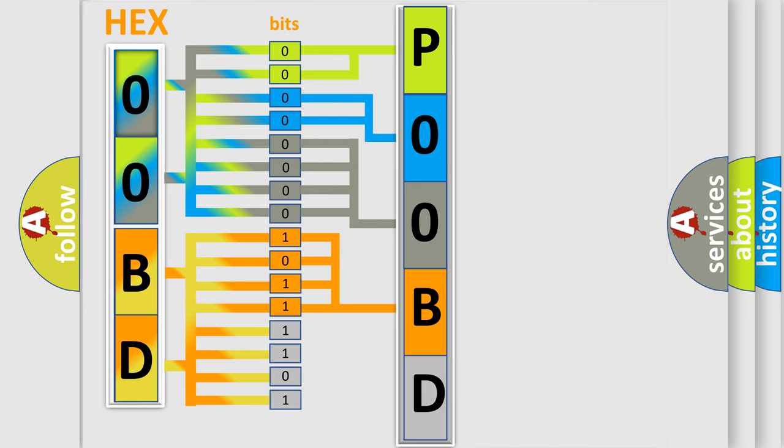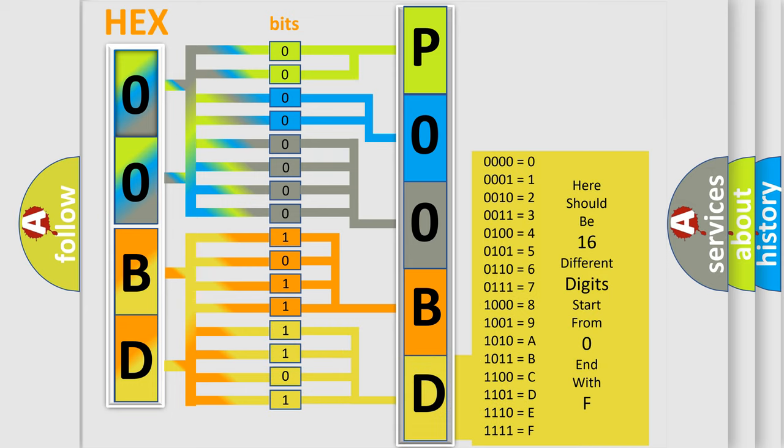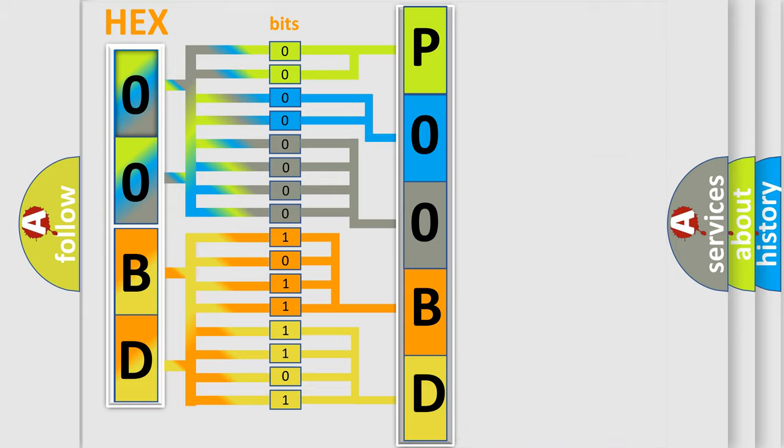A single byte conceals 256 possible combinations. We now know in what way the diagnostic tool translates the received information into a more comprehensible format.